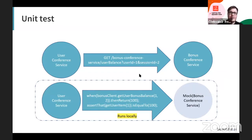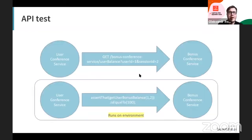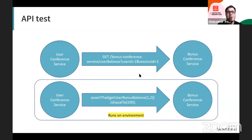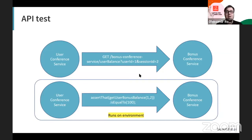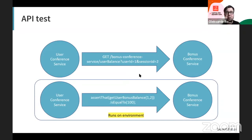That's why the alternative solution is to implement API tests — the simplest possible API tests. We deploy both services to an environment, make a real call to the bonus service, get the real response, and verify it matches the expected result. The main benefit is we're using real implementation, not assumptions. But the disadvantage is that we need to spend time deploying both services, and in some cases other connected services as well, just to check one simple API call.